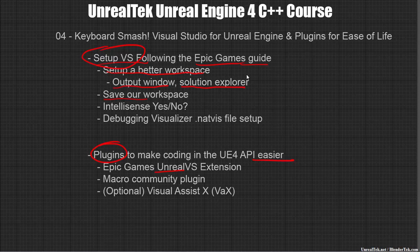We're going to look at using IntelliSense — yes or no. Do we want to wait for IntelliSense to look at our code? It's not fully supported in Unreal yet, but it's a lot better than it used to be. We're also going to add the debugging visualizer .natvis files so we have all the debugging symbols available. After that we'll look at some plugins, including the Unreal Visual Studio extension and the macro community plugin.